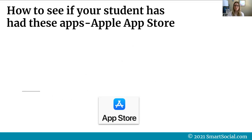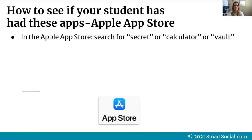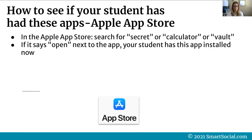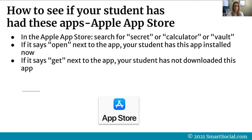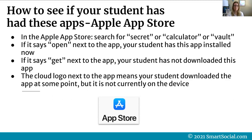We'll walk you through how to see if your student has had these apps on Apple App Store devices. Once you're in the Apple App Store, search for 'secret,' 'calculator,' or 'vault.' In the list of apps that appear, if it says 'Open' next to the app, your student has this app installed right now. If it says 'Get' next to the name, your student has not downloaded this app before. Finally, if the cloud logo appears next to the name of the app, it means your student downloaded the app at some point but it is not currently on the device.